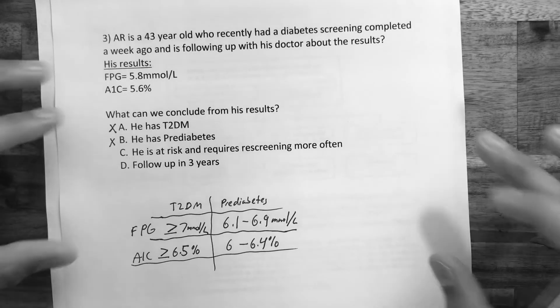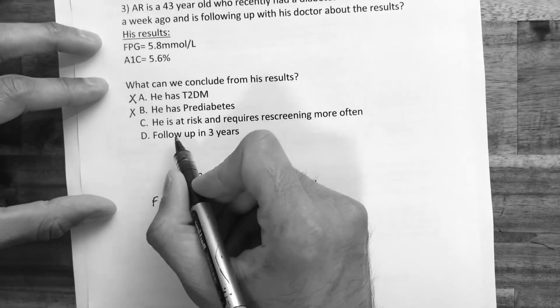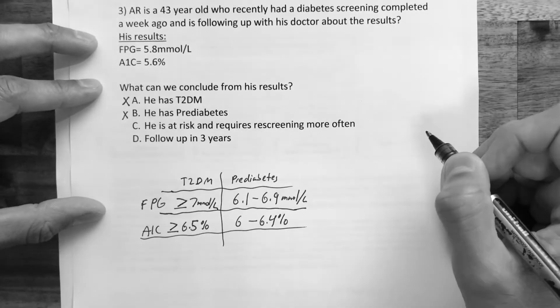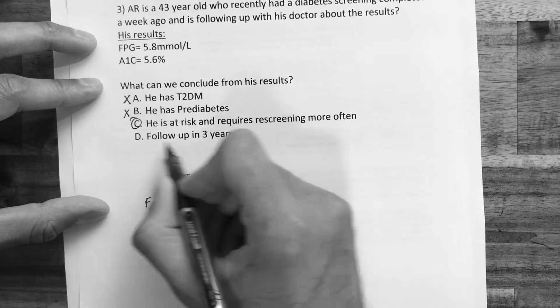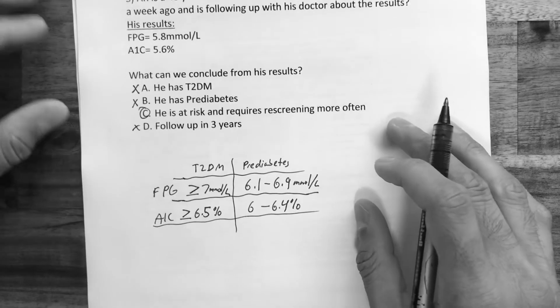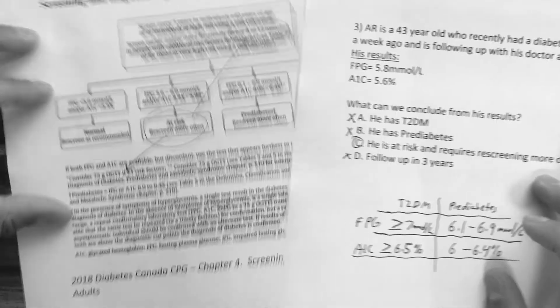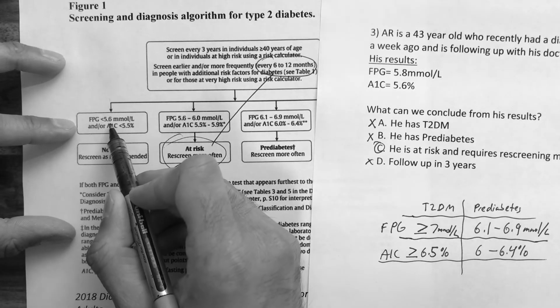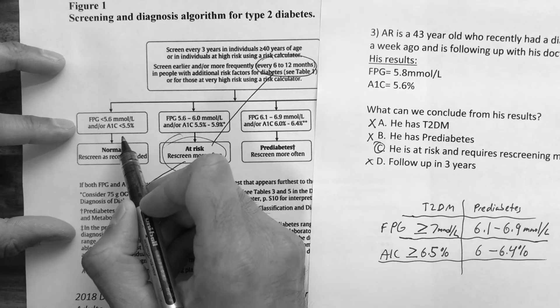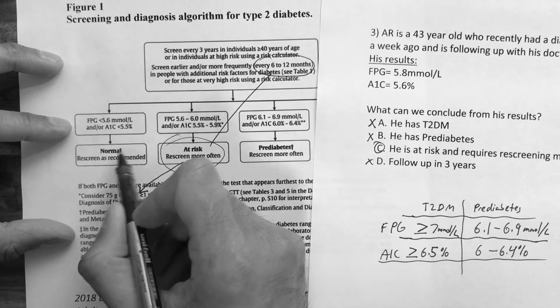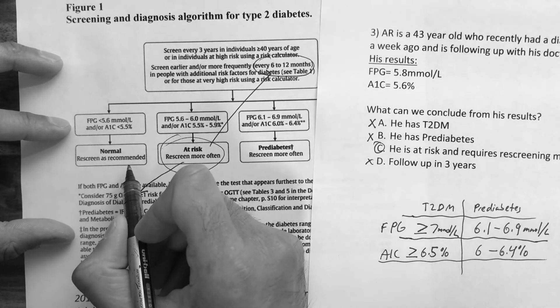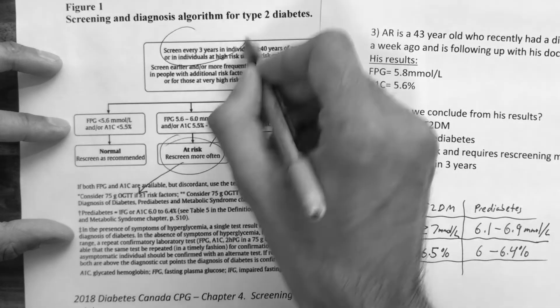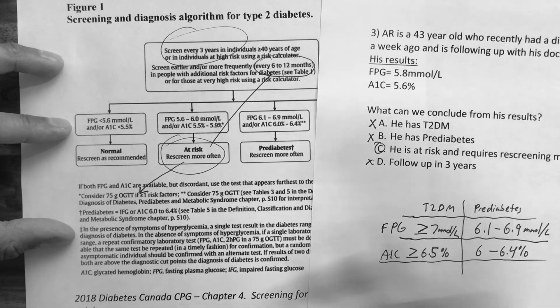So our answer is C — he's at risk and requires re-screening more often. Option D — follow up in three years — would apply if his fasting plasma glucose was less than 5.6 or his A1c was less than 5.5, which would be normal, and we would re-screen as recommended. That's question three done.